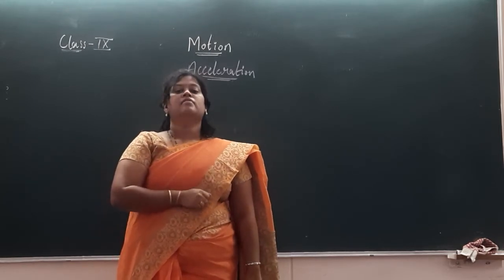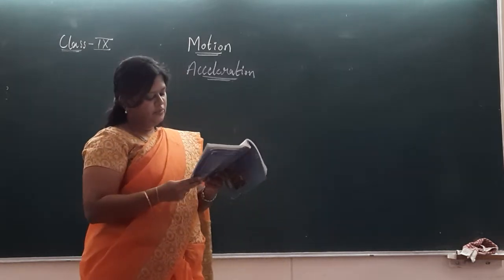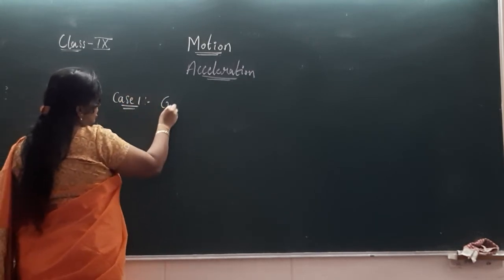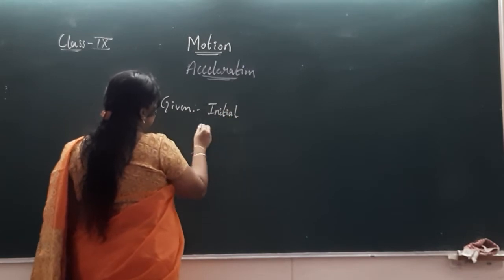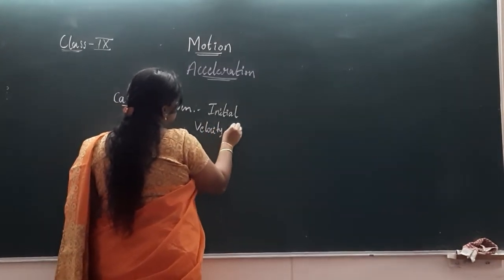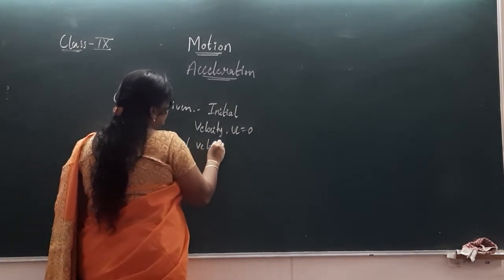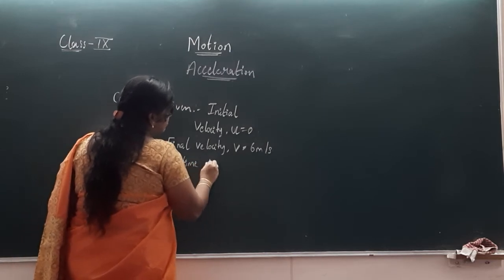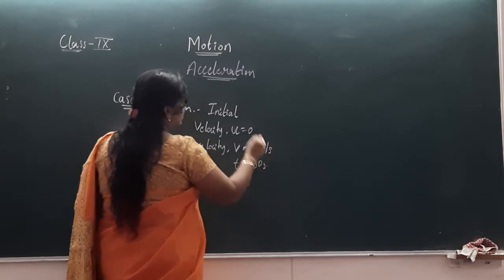In both cases, what is the acceleration? Let us solve. Case 1 given: initial velocity u is equal to 0. Final velocity v is 6 meter per second. And time t is 30 seconds.